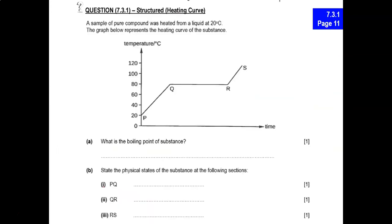For this question, once you see this diagram, let's pick out the important information. First, we need to identify the state — at 20 degrees Celsius this is a liquid state. If this is a liquid state, and this part is a horizontal line with constant temperature, this means boiling must occur. This is the boiling point, and this must be the gaseous state. In between the liquid and gaseous state, this must be a mixture of liquid and gas.